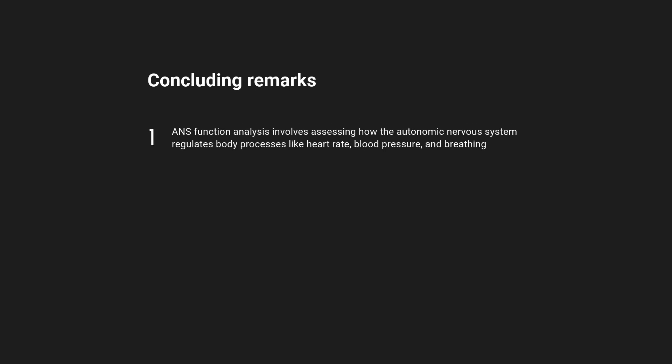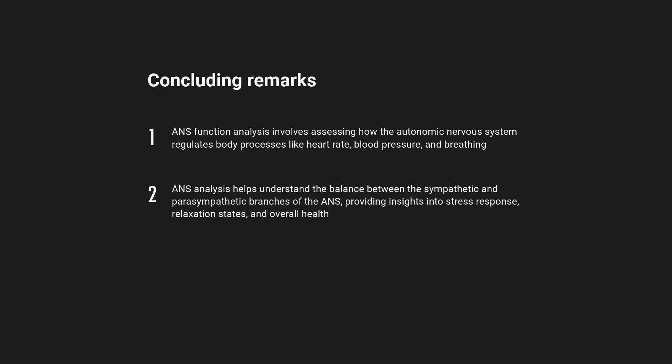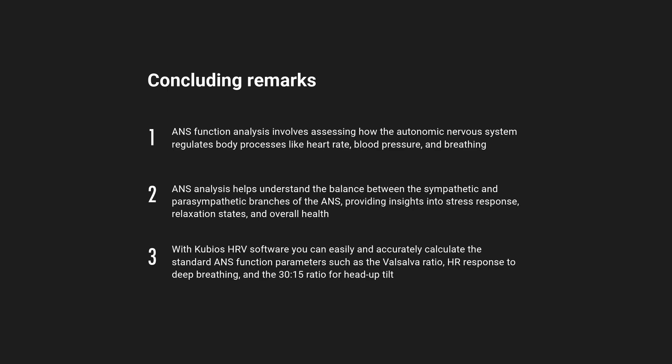Let's summarize this video. ANS function analysis involves assessing how the autonomic nervous system regulates body processes like heart rate, blood pressure, and breathing. ANS analysis helps understand the balance between the sympathetic and parasympathetic branches of the ANS, providing insights into stress response, relaxation states, and overall health. With QBOs HRV software, you can easily and accurately calculate the standard ANS function parameters, such as the Valsalva ratio, HR response to deep breathing, and the 30-15 ratio for head-up tilt.